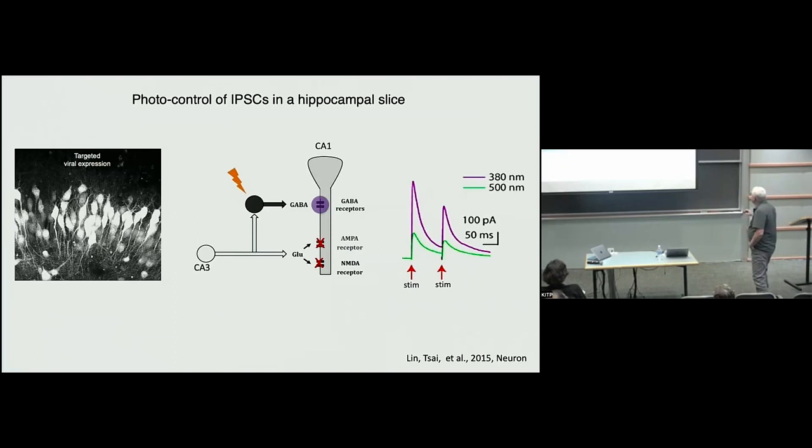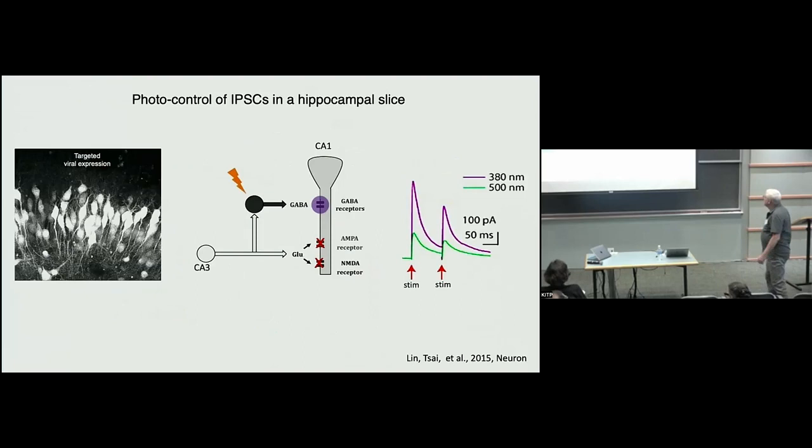We can go back and forth and shine different colors of light on the preparation. And if you do that, what you find is that you can antagonize or block or reduce the amplitude of IPSCs. And you can see it's not doing anything to the paired pulse ratio, but it's reducing the amplitude of these inhibitory postsynaptic currents. So it works nicely. That was the alpha one isoform of the GABA alpha subunit.